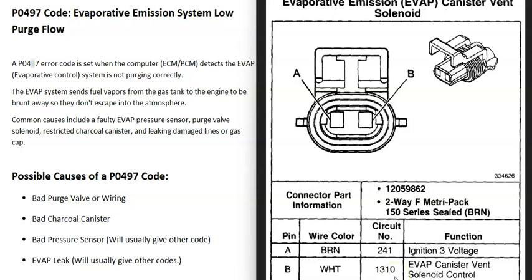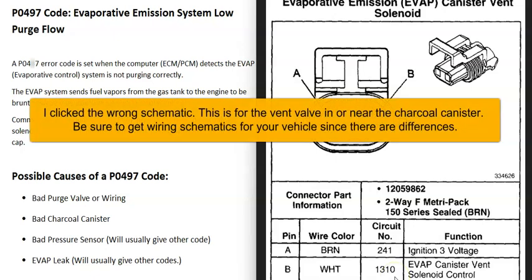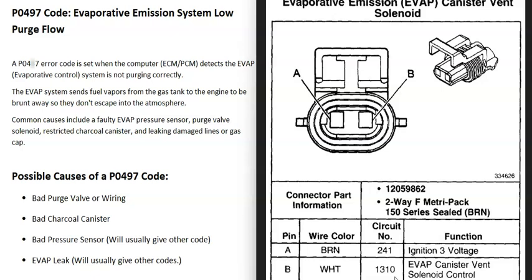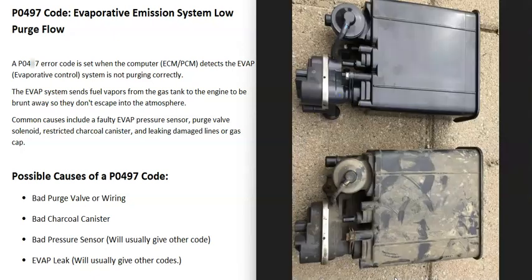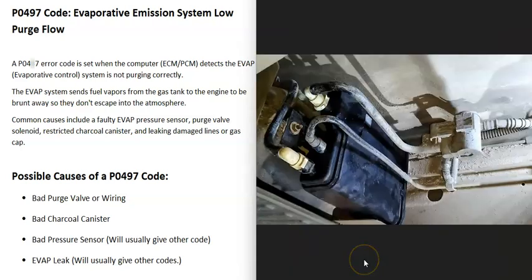Keep in mind that if anything's wrong with the wiring going to the purge valve — an open, a short, a bad connection — that's going to cause problems too. So if you go to check out that purge valve, keep in mind wiring can also cause issues. The next thing that could cause this is some kind of issue with the charcoal canister. The charcoal canister holds all the gas vapors when the engine is not running. There are a lot of little charcoal pellets inside, and if those get clogged up so the gas vapors can't flow through, that's going to cause problems because those vapors can't flow up to the purge valve. If the purge valve tests fine, the next thing to check is the charcoal canister.